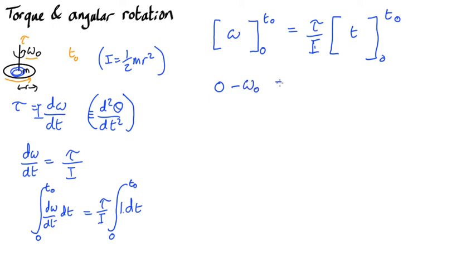velocity is equal to tau over I, t0 minus 0.